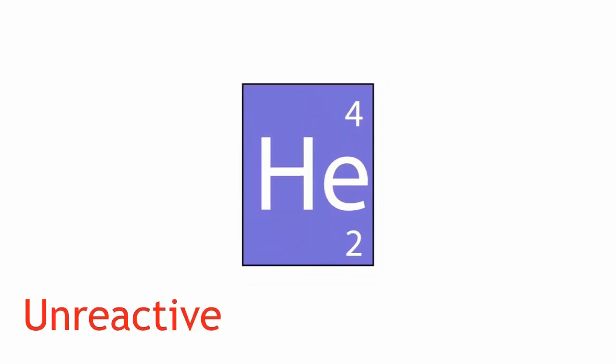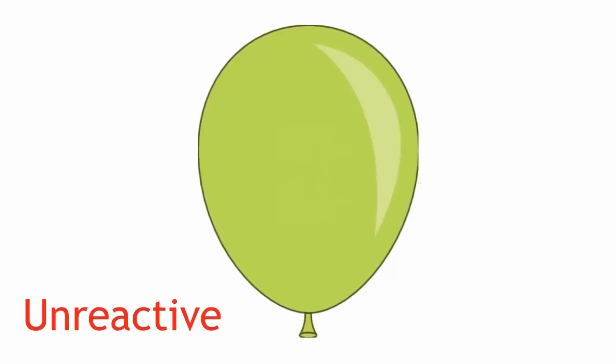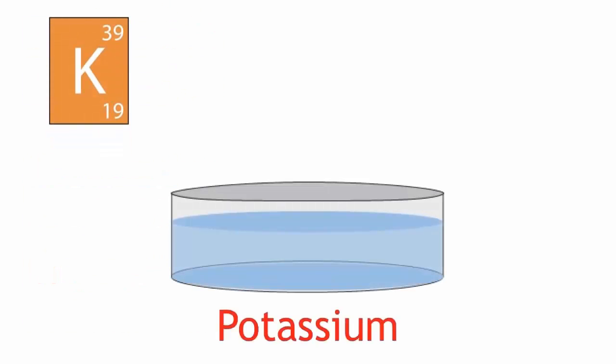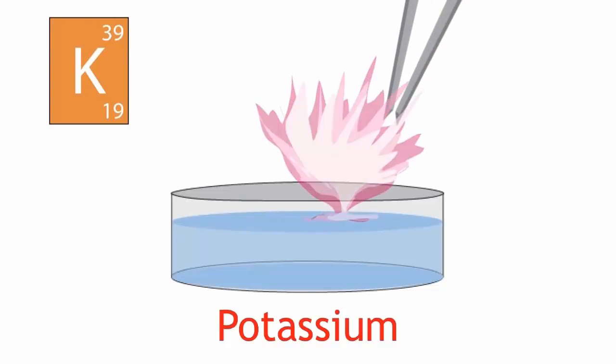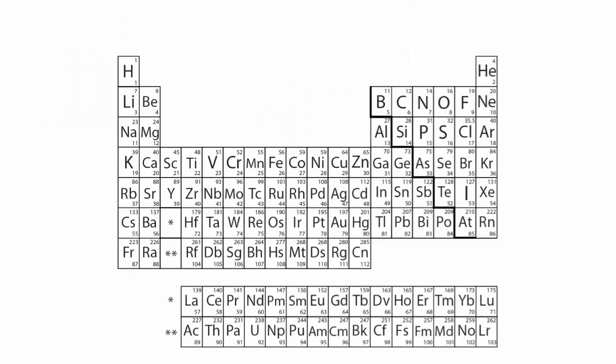For example, some gases are completely unreactive with everything, while some metals have vigorous reactions with water. Properties like these allowed elements to be grouped together.